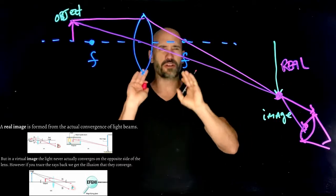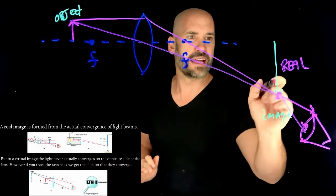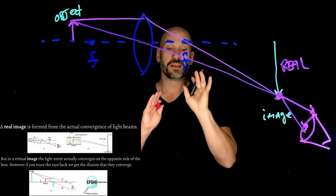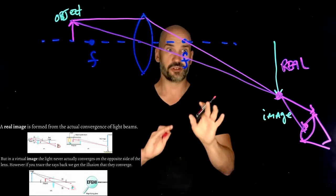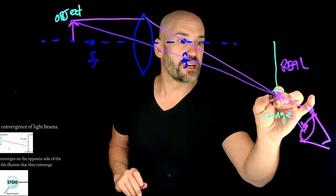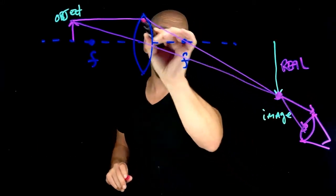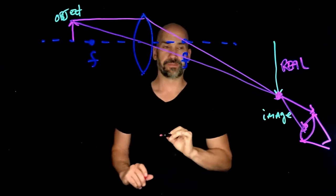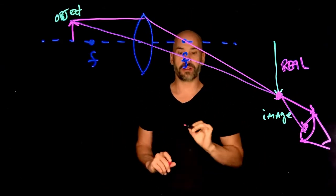And so you're like, how can you ever see an image where it's not that actual point emanating the light? You'll see in a second with the virtual image. But for right now, just notice this image here is formed by actual beams of light converging at that single point. So that's a real image.